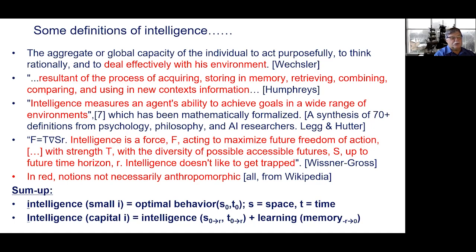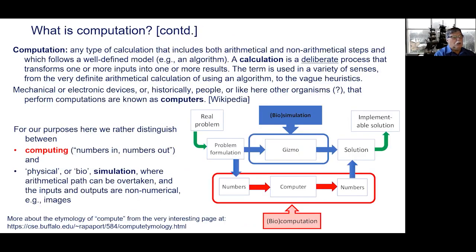By the way, all these definitions and many others have been picked from Wikipedia. We may agree that we have intelligence with a small 'i' which is optimal behavior in various space settings at some time, and Intelligence with a capital 'I' would be the same for a wider range of settings and environments and for a longer time range, using what has been learned from previous experience. You might have noticed things in red — these are definitions that are not necessarily anthropomorphic; they would apply to almost anything that is alive.